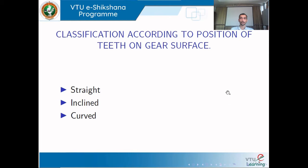One more classification is according to the position of the teeth on the gear: teeth can be straight (as in spur gears), inclined (as in helical and bevel gears — inclined to the axis of the shaft), or curved (as in spiral gears, where teeth are curved with respect to the shaft axis).